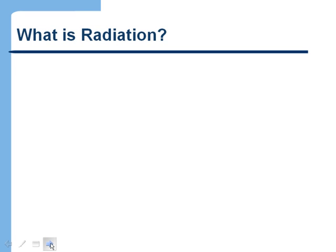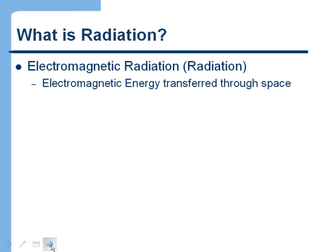The next thing we want to look at is what is radiation? When we use the term radiation, what we're really referring to is electromagnetic radiation. Electromagnetic radiation is just electromagnetic energy that's transferred through space. We already talked a little bit about this a few minutes ago, and I mentioned that light is an example of electromagnetic energy, as are X-rays.